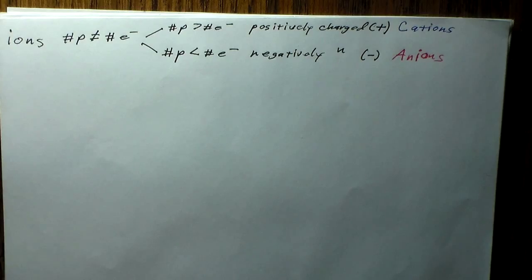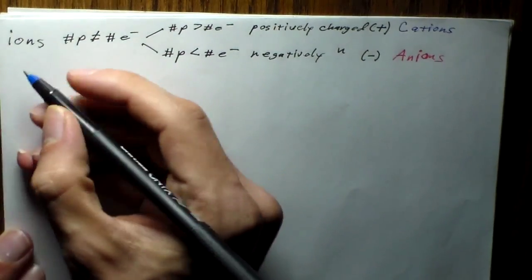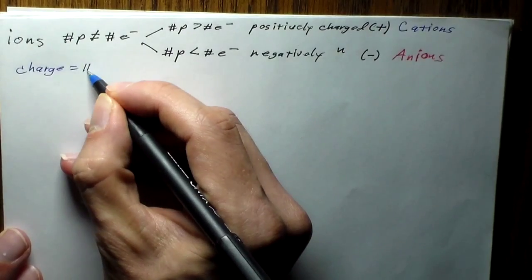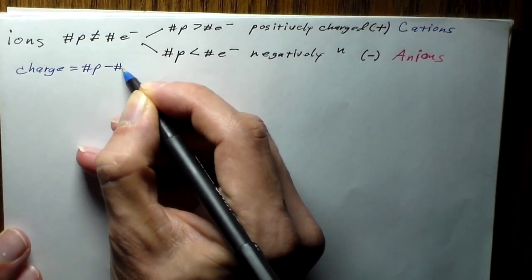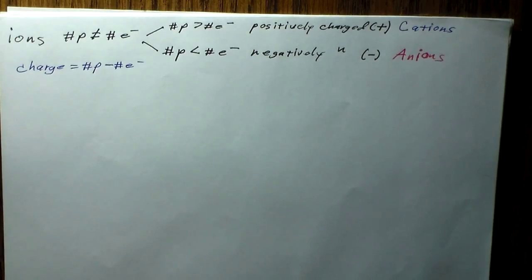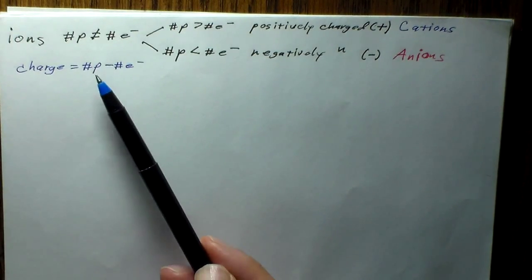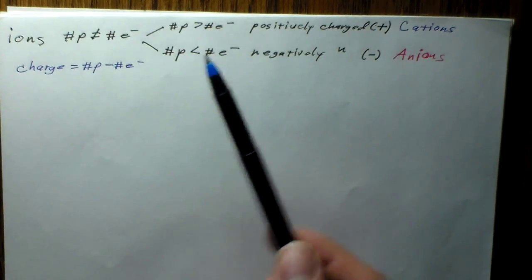If we want to know what the charge on a particular ion is, the charge is going to be equal to the number of protons minus the number of electrons. Remember, electrons are negatively charged and protons are positive, so protons minus electrons will tell us the overall charge.